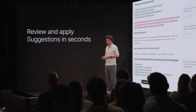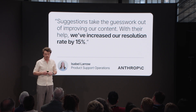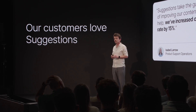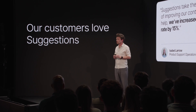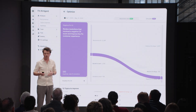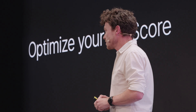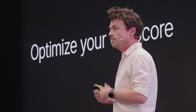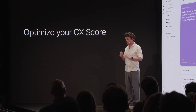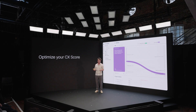Beta customers who are on this love it. Here is Anthropic — an amazing customer and one of the best AI companies in the world. A bunch of suggestions helped Anthropic increase resolution rate by 15% — that was a huge jump — just through going through the suggestions and accepting the AI-powered recommendations. You can also optimize by CX score: the same thing — drill down, get suggestions to improve CX score, accept them. All these conversations just get better and the customer experience improves.